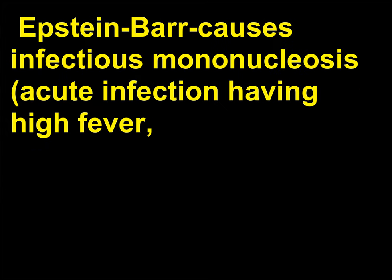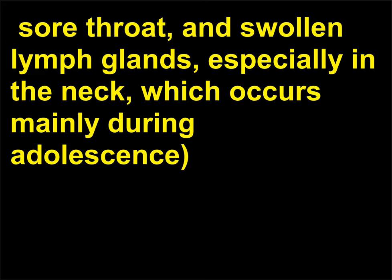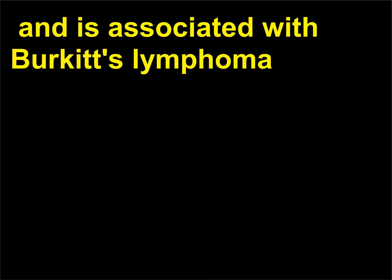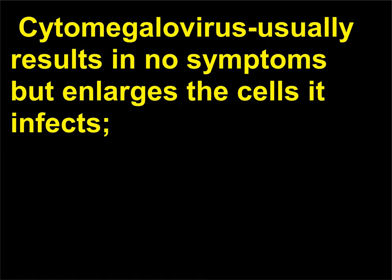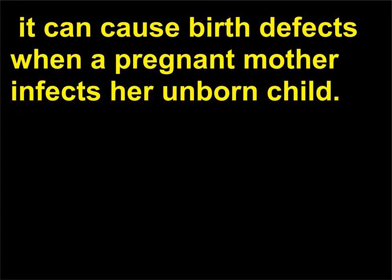Epstein-Barr causes infectious mononucleosis, an acute infection having high fever, sore throat, and swollen lymph glands — especially in the neck — which occurs mainly during adolescence, and is associated with Burkitt's lymphoma: malignant tumors of the jaw or abdomen that occur mainly in African children and in tropical areas. Cytomegalovirus usually results in no symptoms but enlarges the cells it infects. It can cause birth defects when a pregnant mother infects her unborn child.